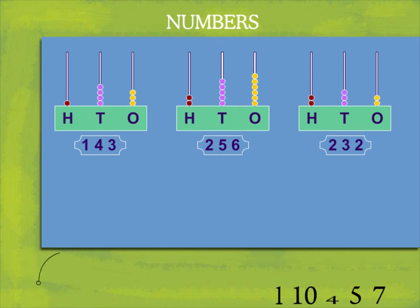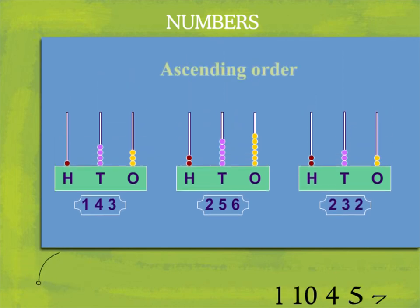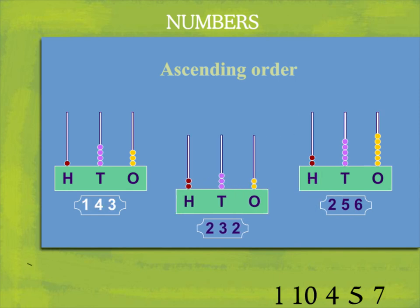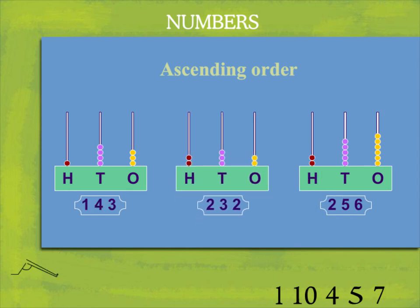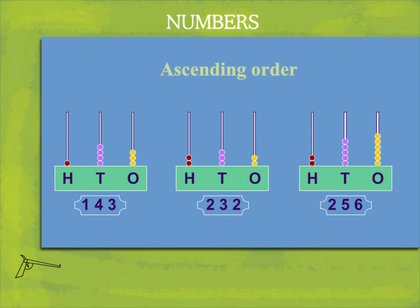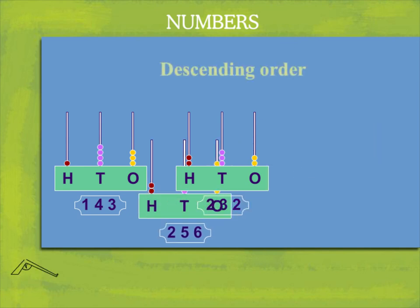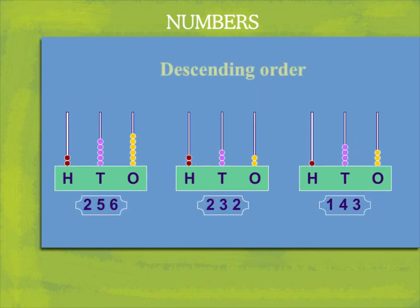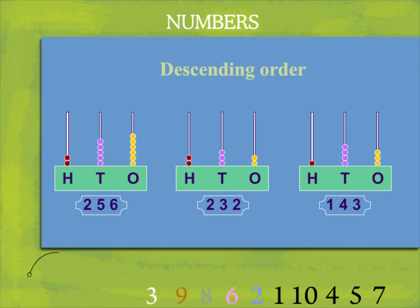What is their ascending order? Yes, it is one hundred and forty three, two hundred and thirty two, two hundred and fifty six. And what is their descending order? It is two hundred and fifty six, two hundred and thirty two and one hundred and forty three.